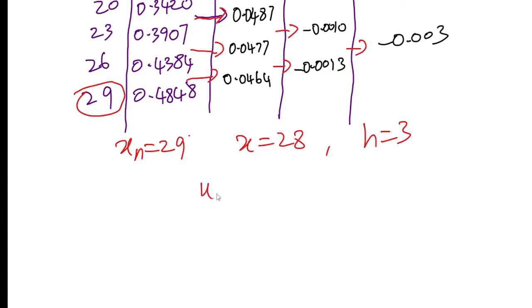So u is equal to the formula: x minus xn by h. x is equal to 28 minus 29 by h equals 3, so u equals minus 1/3, minus 0.333. And u will be negative.